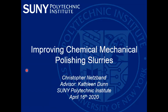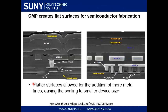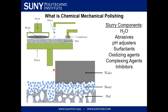My name is Christopher Netsband. I work for Professor Dunn on improving chemical mechanical polishing slurries for semiconductor applications. CMP slurries are used to create flat surfaces for semiconductors. On the left is an image of a semiconductor without CMP, and on the right with CMP performed. These flat surfaces allow for the addition of more metal lines, easing the scaling to smaller devices. CMP is a polishing process where the wafer is pressed against a rotating pad that has a slurry with abrasives and chemicals.